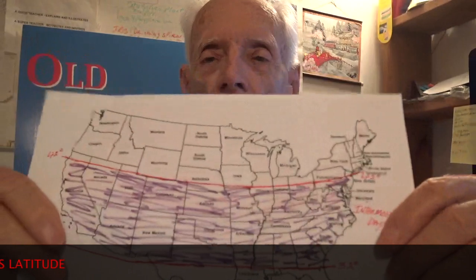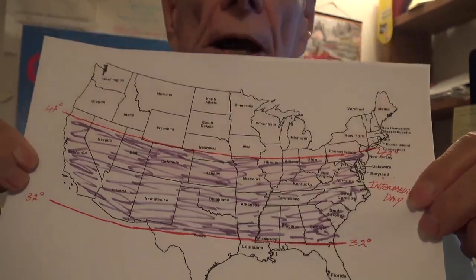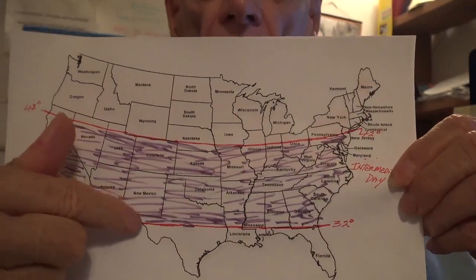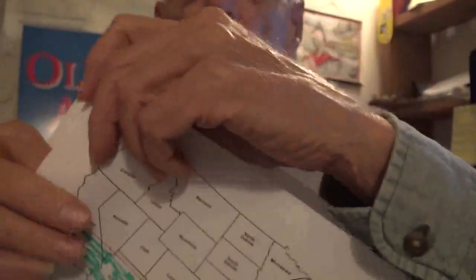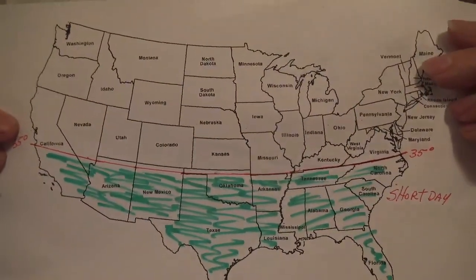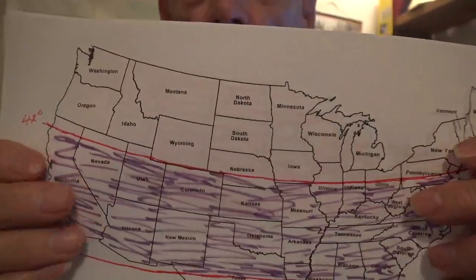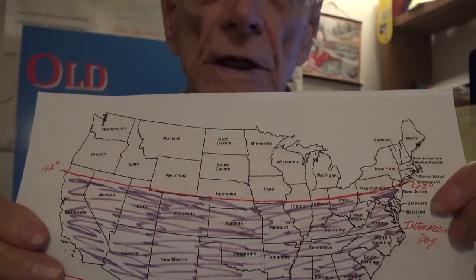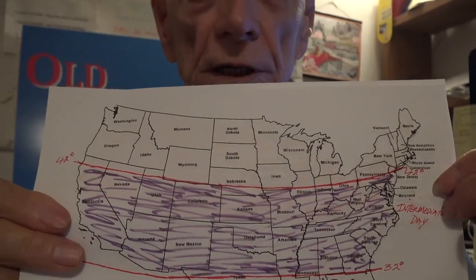We also have an intermediate zone. It is pretty much in the center portions of the United States. It overlaps the long day zone in the north and it overlaps the short day zone in the south. The intermediate zone typically gets about 12 to 14 hours of daylight on the longest days of the summer.